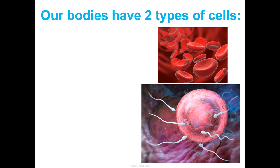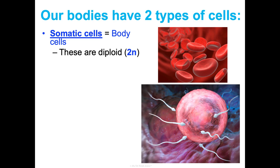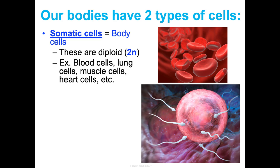Your body has two types of cells in it. First are your somatic cells — these are just your body cells. The cells that are in your brain, your skin, your heart, your blood, etc. These are diploid, and diploid is represented as 2N. This will mean more in a little bit. Those are some of your examples.